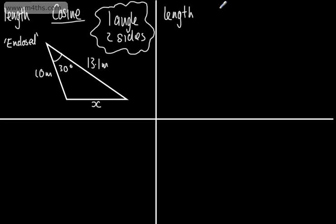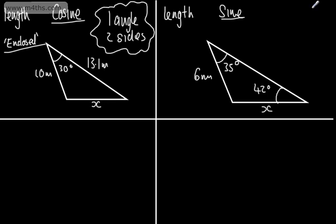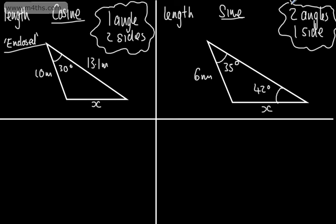Now let's look at finding a length using the sine rule. With the sine rule, we don't have an enclosed angle. Drawing a triangle with different values — let's say this angle is 35 degrees, this side length is 6 millimeters, this angle is 42 degrees, and the unknown side is x. Here we don't have an enclosed angle. To use the sine rule to find a missing length, we need two given or known angles and one known or given side. The way I like to think about it: have I got an enclosed angle? If not, use the sine rule. If I've got an enclosed angle, use the cosine rule.